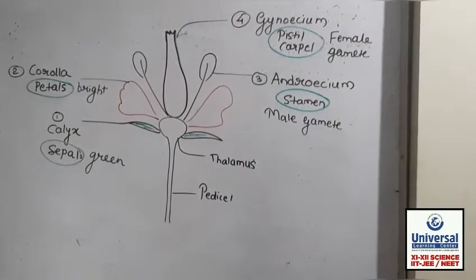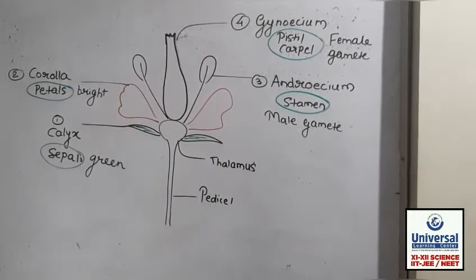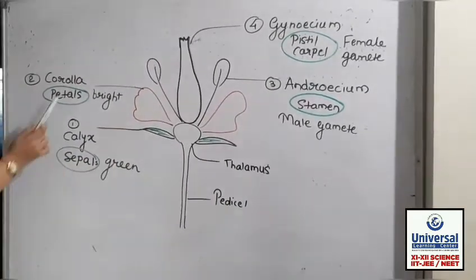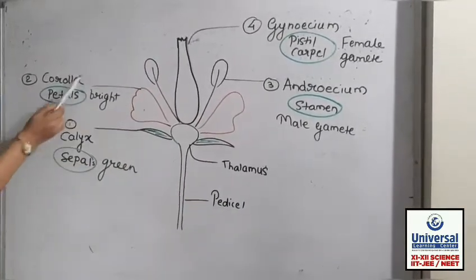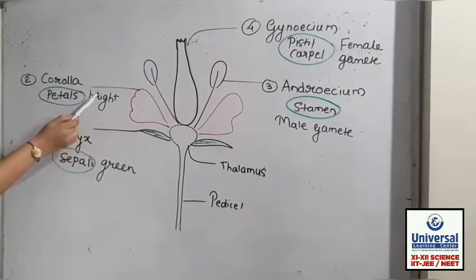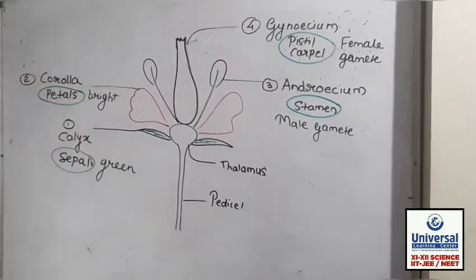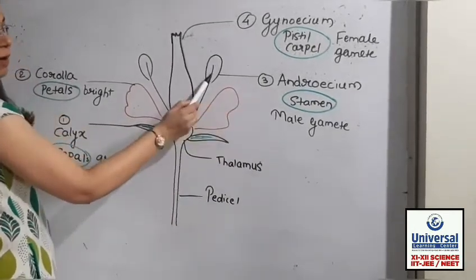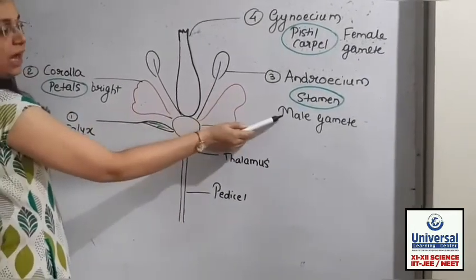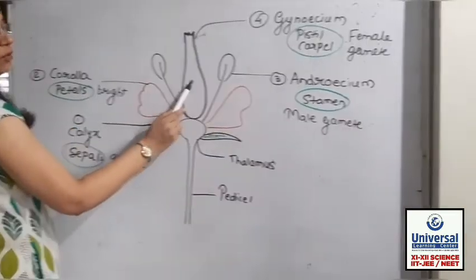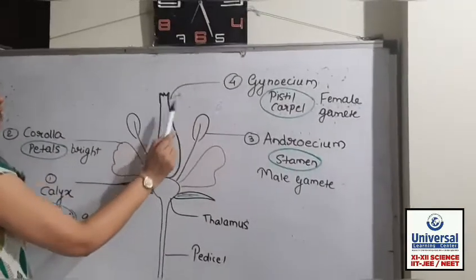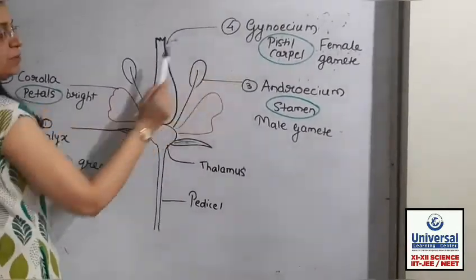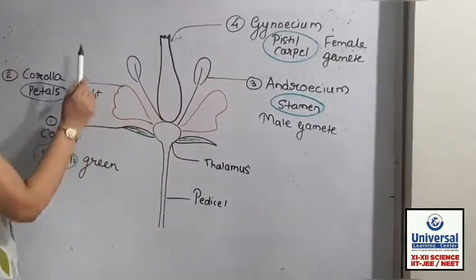To summarize all four walls of the flower: calyx, which is made up of sepals and is green in color; corolla, which is made up of petals and is brightly colored; then the third wall, androecium, which is made up of stamens and produces male gametes; fourth wall, gynoecium, which is made up of pistil or carpel and produces female gametes.